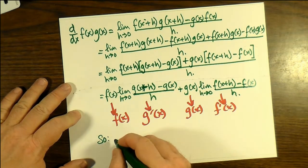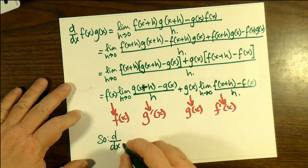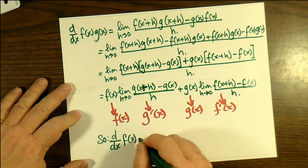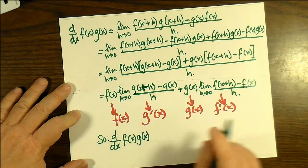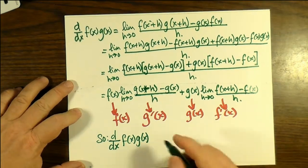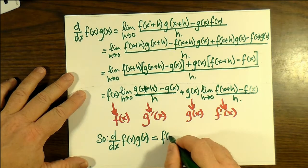So let's just highlight these. Notice g(x) and f(x), which were taken out of the difference quotient earlier, or taken outside the limit earlier, are untouched.